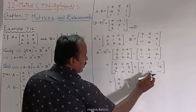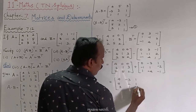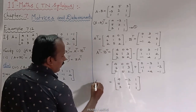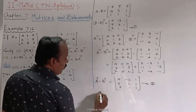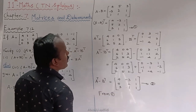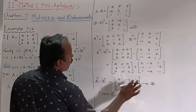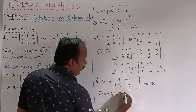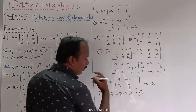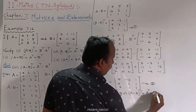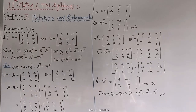So A transpose minus B transpose equals [4, -3, 1; 5, 2, 1; 3, 1, 1]. This is equation number 2. From equations 1 and 2, both sides are equal, which implies that the transpose of (A minus B) equals A transpose minus B transpose. Hence the Third Subdivision is completed.